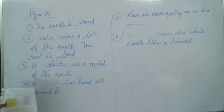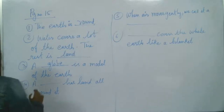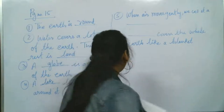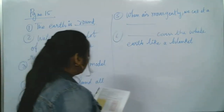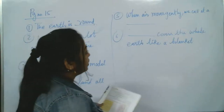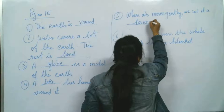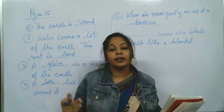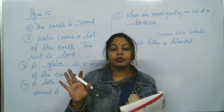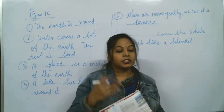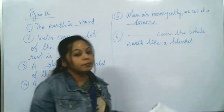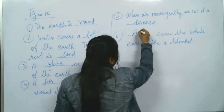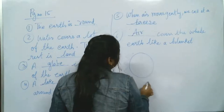A dash has land all around it - what is it? Lake! Because a river flows and doesn't have land all around it. Lake has land all around it. And when the air moves gently, we call it a breeze. When the air moves fast, that is called a storm. But when the air moves gently and we feel good, that is called a breeze. The dash covers the whole earth like a blanket - that is air.